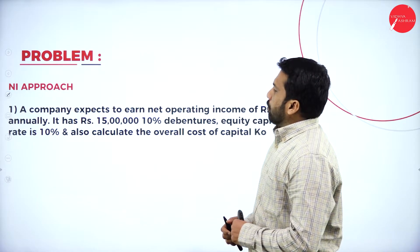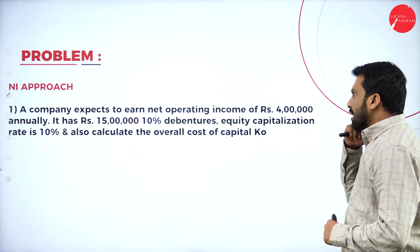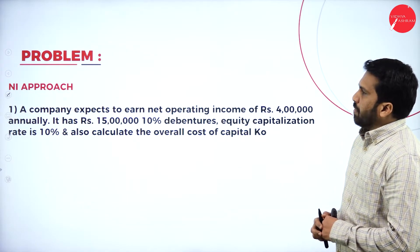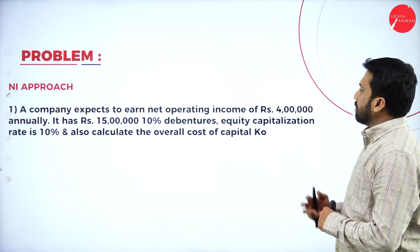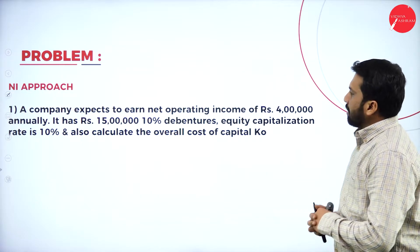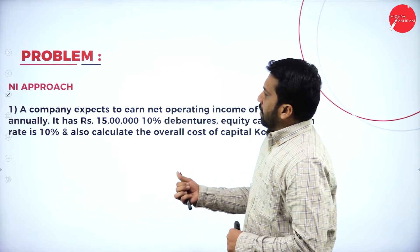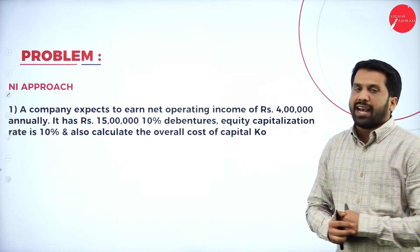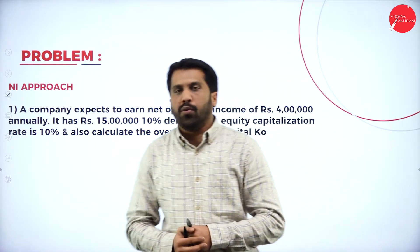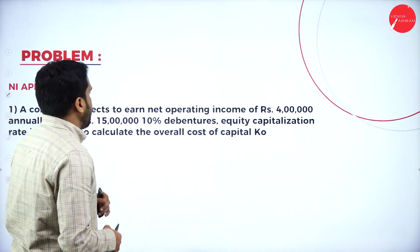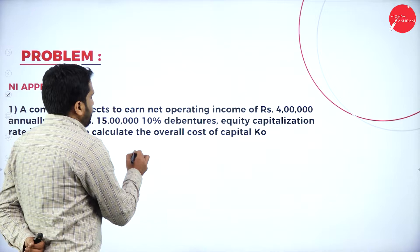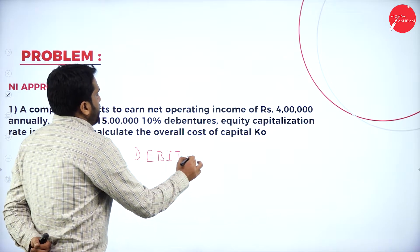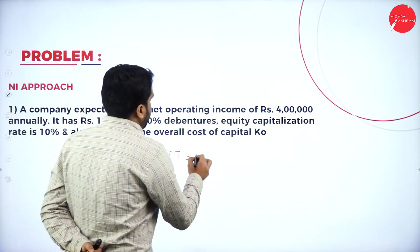NI approach: A company expects to earn net operating income of rupees 4 lakh annually. It has rupees 15 lakh at 10% debentures. Equity capitalization rate is 10%. Also calculate the overall cost of capital — that we call KO. In this problem, EBIT we have around 4 lakh.